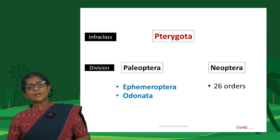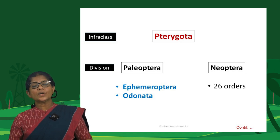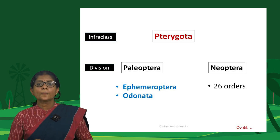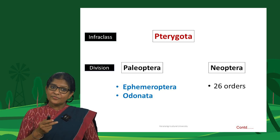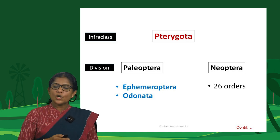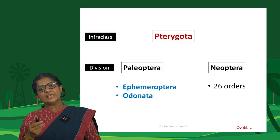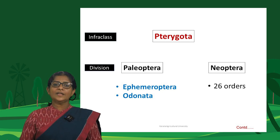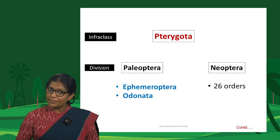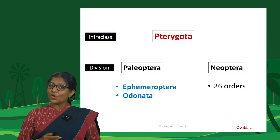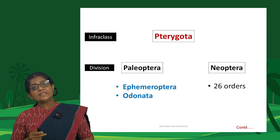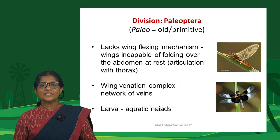Infraclass Pterygota includes 28 insect orders of winged insects and is further classified into two divisions: Division Palaeoptera and Division Neoptera. Division Palaeoptera includes two insect orders — order Ephemeroptera and order Odonata — while Neoptera includes 26 insect orders.